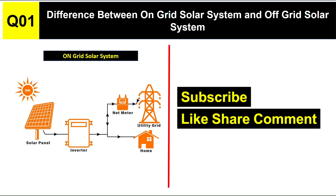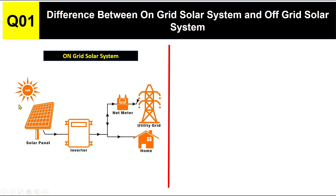This is the only solar system — you can see here the solar panel and the inverter, and then it goes to the home. There are two connections coming to the home: one from the utility grid and another from the solar panel. When solar power is not available — maybe due to sunlight not being available or some other reason — the customer gets electricity supply from the utility grid. Similarly, when the utility grid is not available, the customer gets electricity from the solar panels. This is the on-grid solar system.